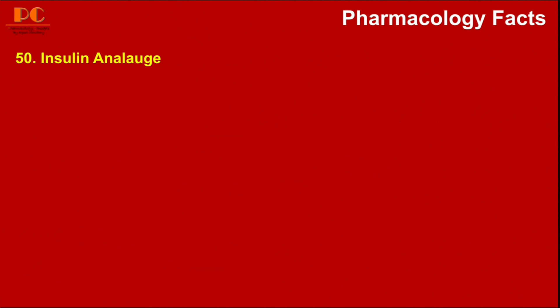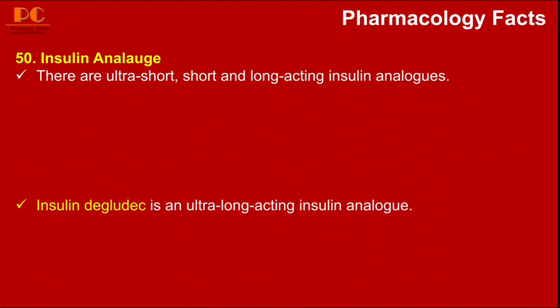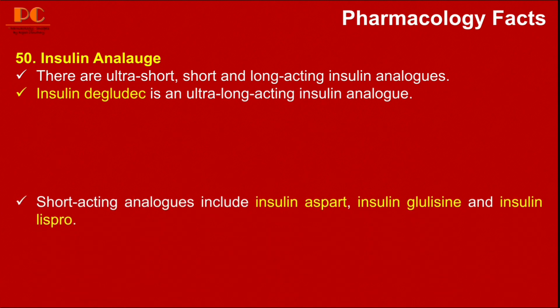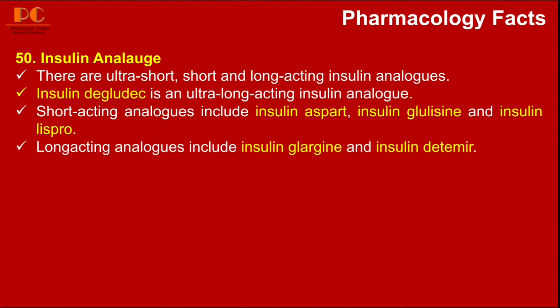The next fact is about insulin analogues. There are three types: ultra-short acting, short-acting, and long-acting insulin analogues. Insulin degludec is an ultra-long acting analogue. Short-acting analogues include insulin aspart, insulin glulisine, and insulin lispro. Long-acting analogues include insulin glargine and insulin detemir.